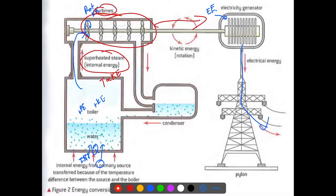A turbine is a specific device that changes kinetic energy into rotational energy — it has to turn kinetic into rotational. What are some other devices that change types of energy? I want you to think about that — pause the video and think of other mechanical devices or otherwise that change one type of energy into another, just like a turbine takes the forward kinetic energy of the gas and turns it into rotational energy. You've got another one right here — the generator takes that rotational energy and turns it into electrical energy. Take two minutes and see if you can come up with other devices.